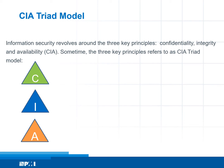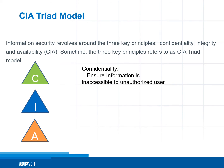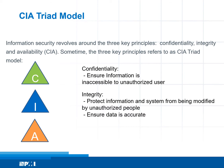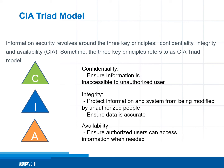Confidentiality ensures information is inaccessible to unauthorized users. Integrity focuses on protecting information and systems from being modified by unauthorized people and ensuring data is accurate. Availability ensures authorized users can access information when needed.